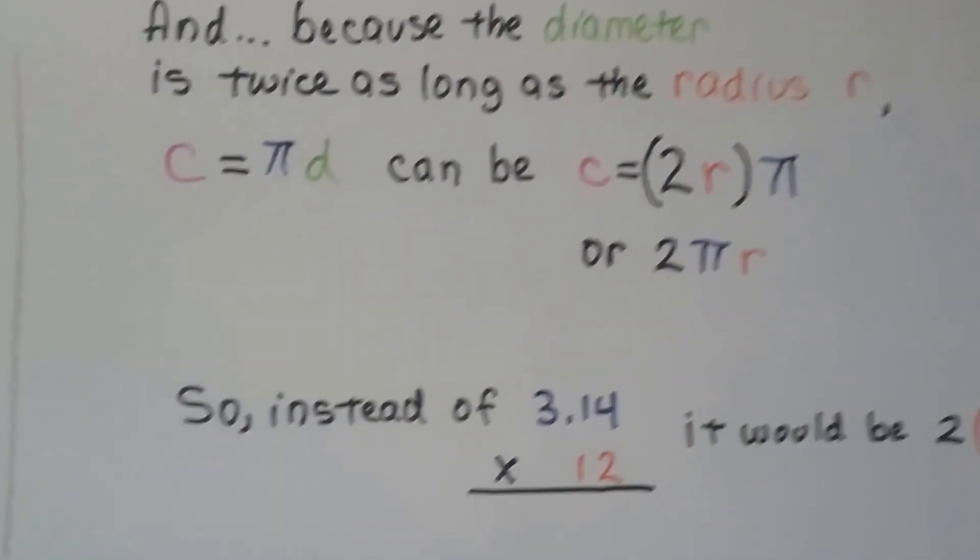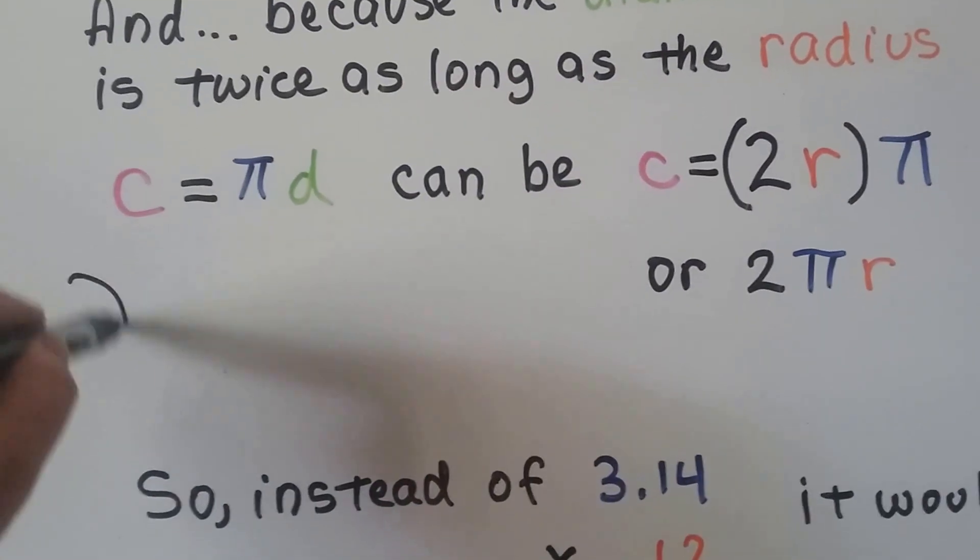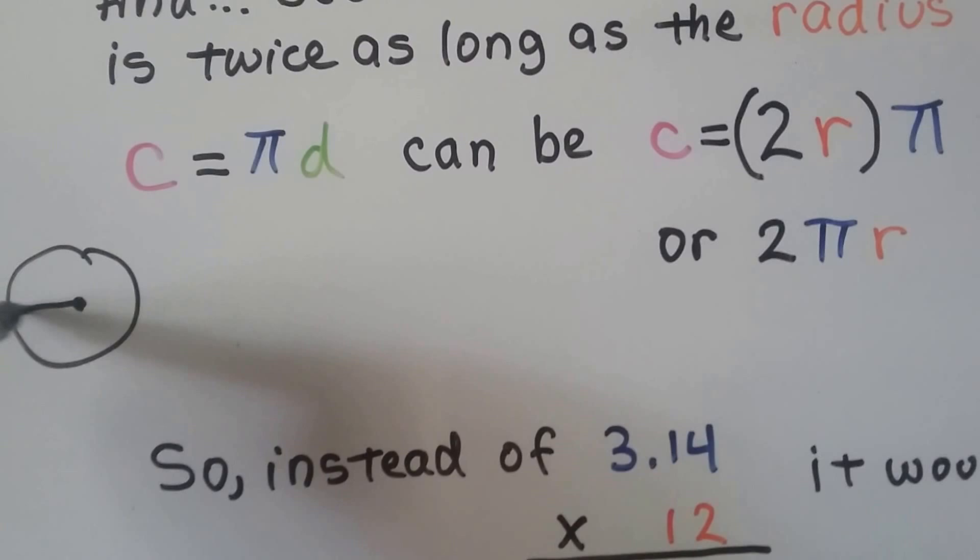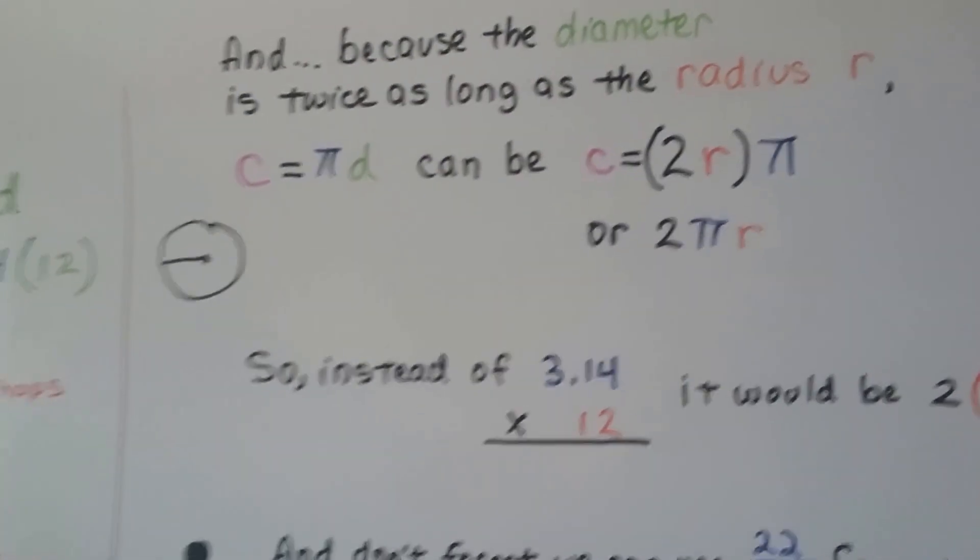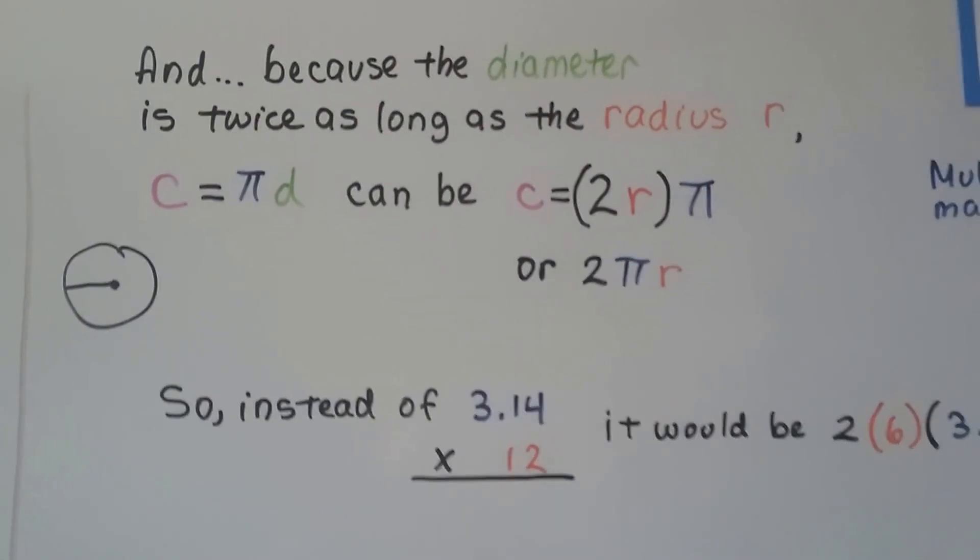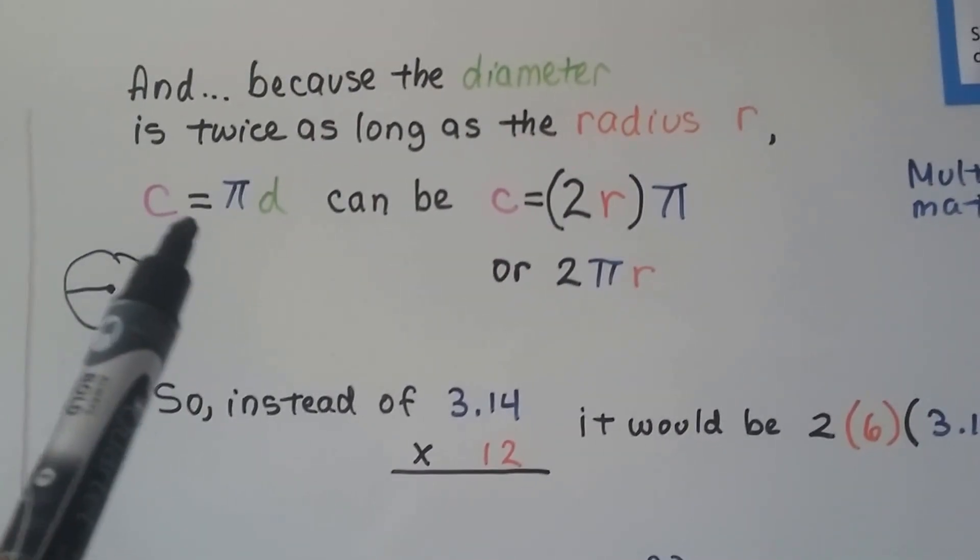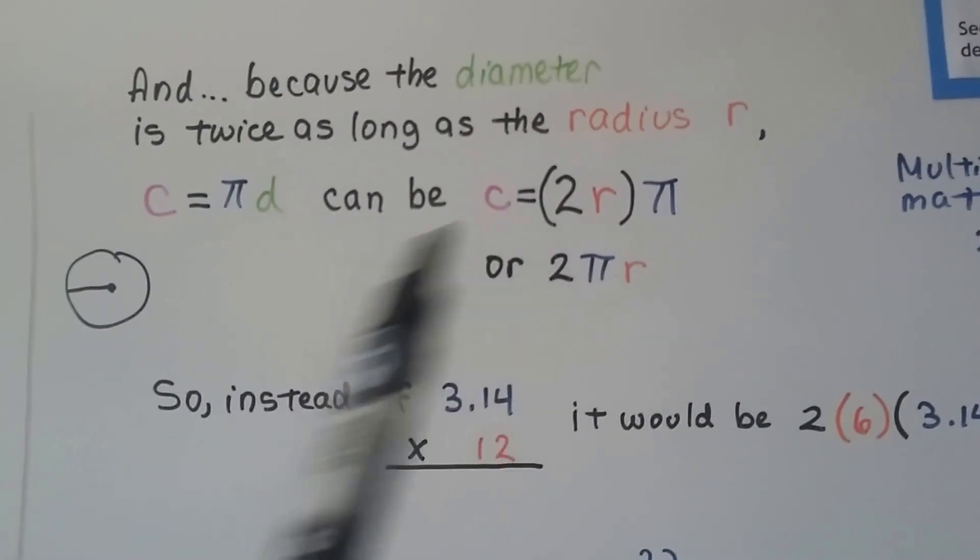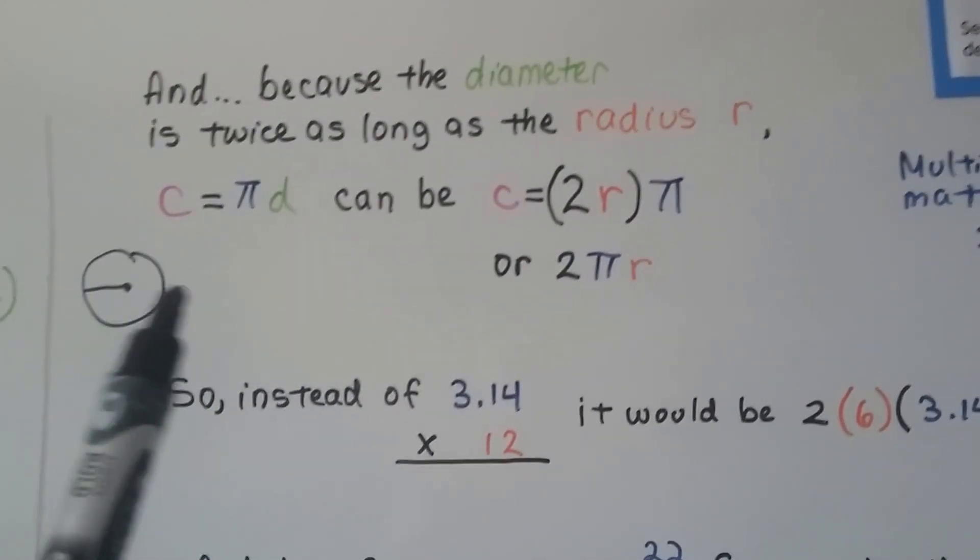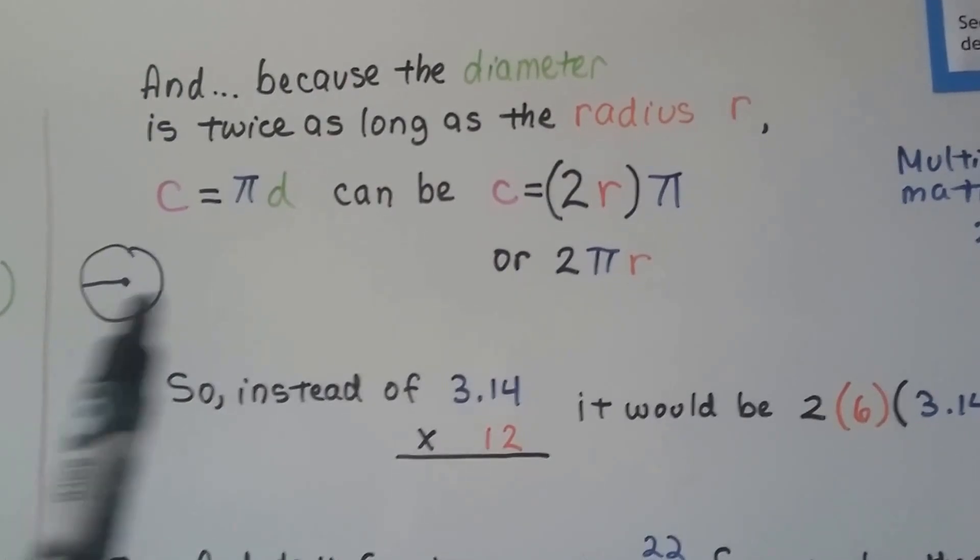What we can do is, what if we had a circle and it said that we only had the radius? We know we can multiply that by two to get the diameter. So the circumference equals pi d times d can be the circumference equals two of the radius, two radii times pi.